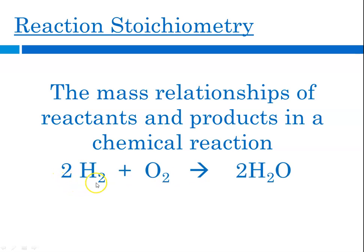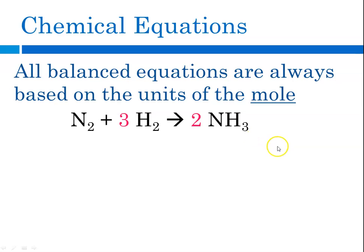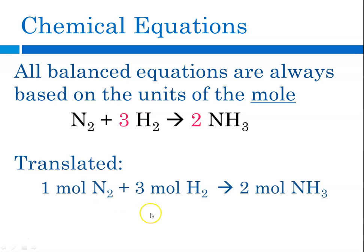For instance, consider the reaction of hydrogen with oxygen to produce water. When talking about chemical equations, we must remember that all balanced equations are always based on units of the mole. We could read an equation two ways: one molecule of nitrogen plus three molecules of hydrogen produce two molecules of ammonia. But as a practical matter, we can't pick up individual molecules, so we use the mole — one mole of nitrogen reacts with three moles of hydrogen to produce two moles of ammonia.